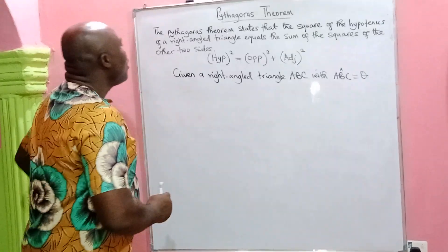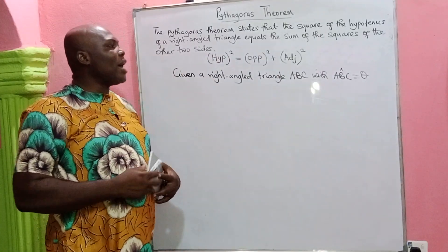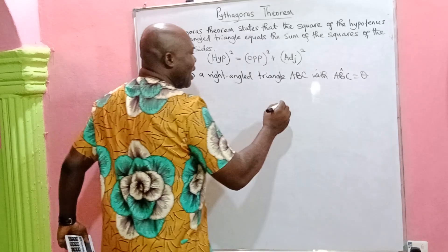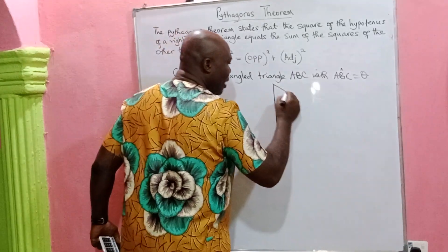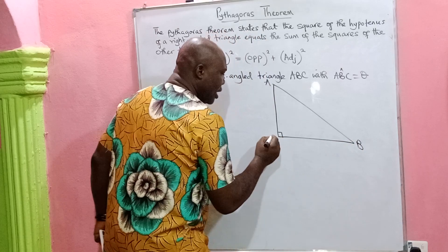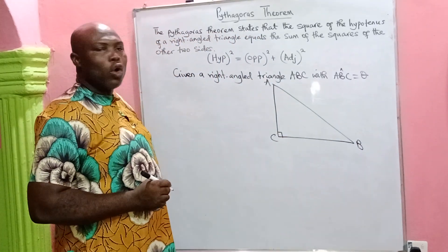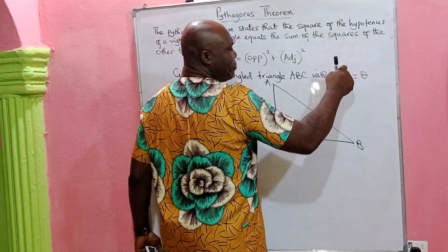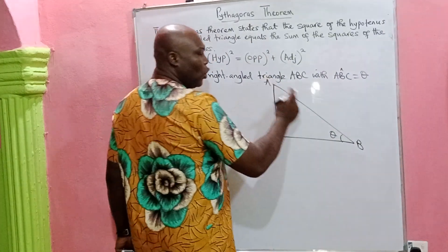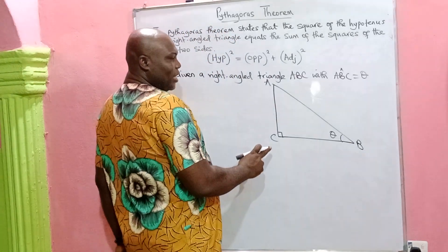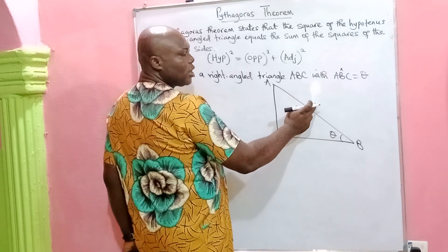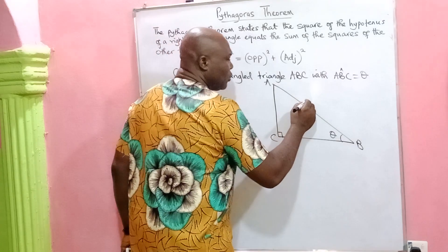The other two sides are the opposite and the adjacent. So the square of the hypotenuse equals the square of the opposite plus the square of the adjacent. We have a right-angle triangle ABC with angle ABC equal to theta. This is the right-angle triangle with the right angle at C. The longest side AB is always opposite to the right angle, and that side is known as the hypotenuse.